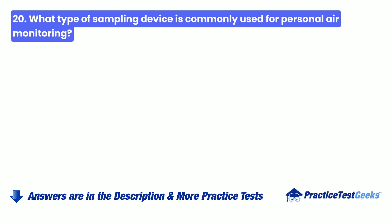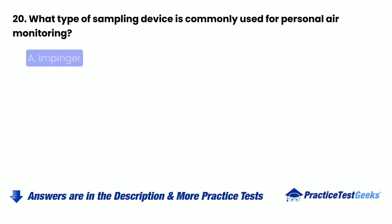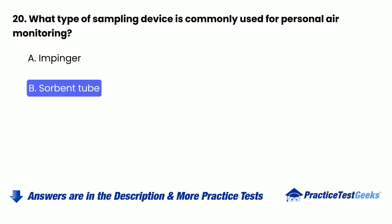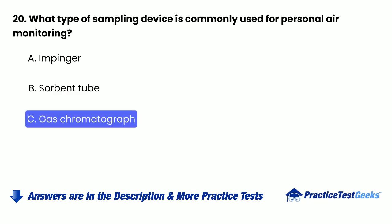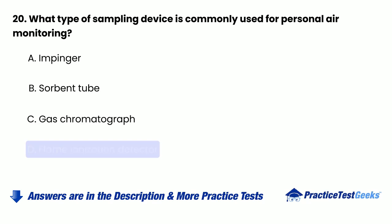Question 20: What type of sampling device is commonly used for personal air monitoring? A. Impinger. B. Sorbent tube. C. Gas chromatograph. D. Flame ionization detector.